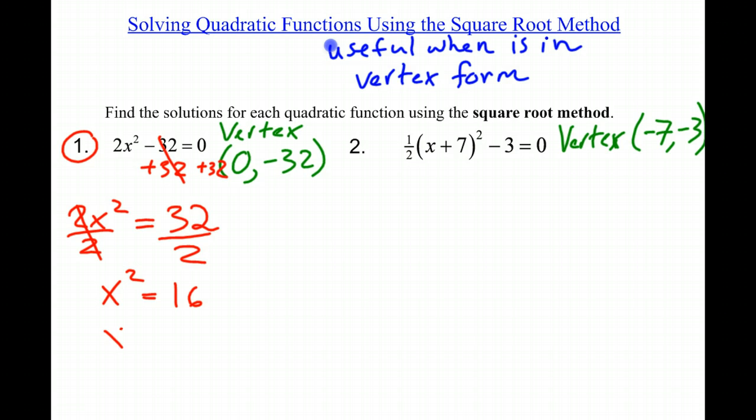This means if I take the square root of both sides - that's where the name square root method comes from - I'm going to have x equals plus or minus the square root of 16. Because both x equals 4 and x equals negative 4, when squared, result in positive 16.